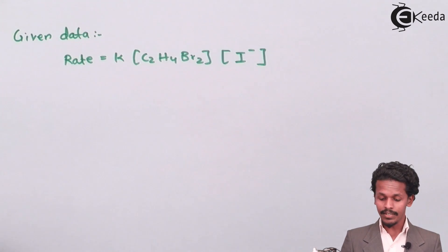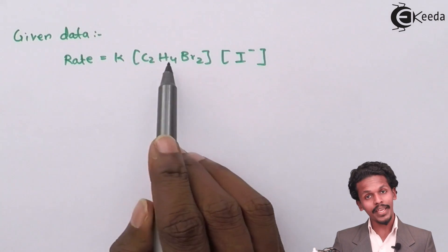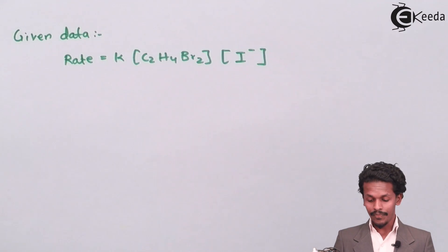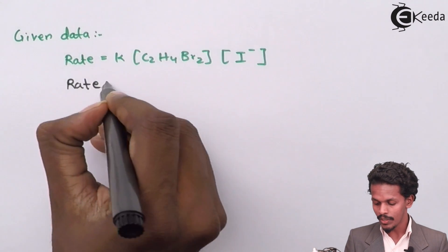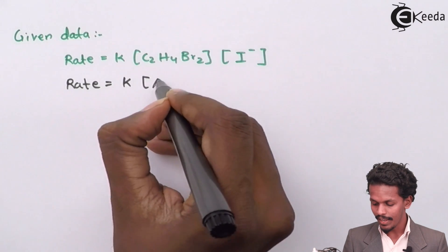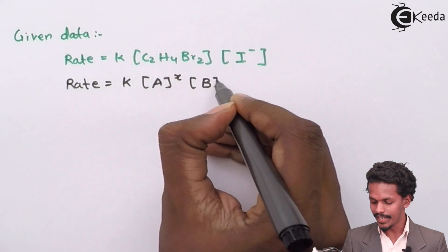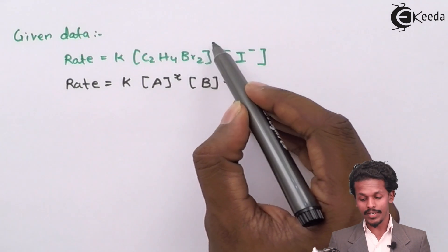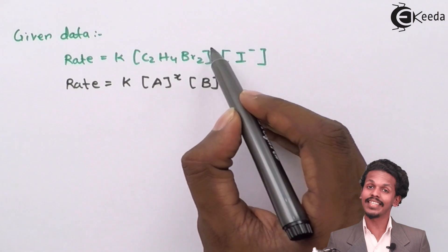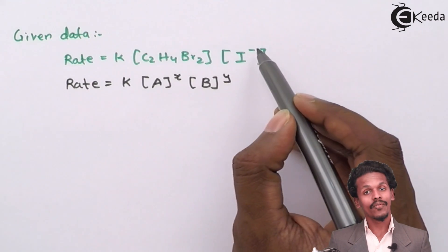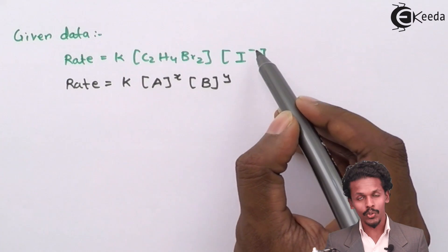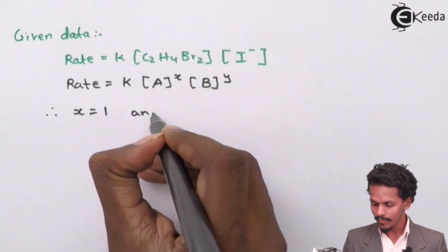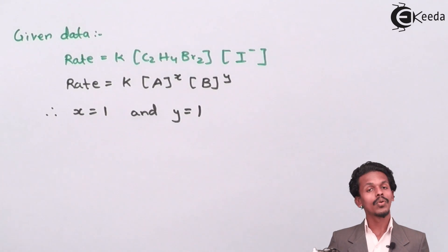If we consider C2H4Br2 as reactant A and I⁻ as reactant B, then according to the rate law formula: rate equals K times [A] raised to x times [B] raised to y. Since there is no exponent number mentioned, the value of x is 1 and the value of y is also 1. Therefore x equals 1 and y equals 1.